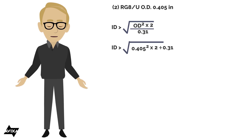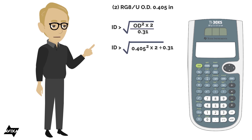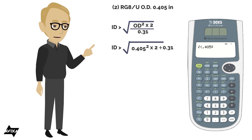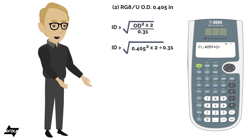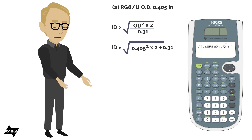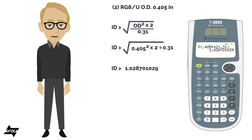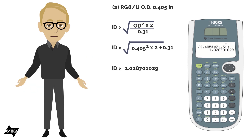Any time you write a value less than one, the proper way to write it is 0.31, so that people don't miss the decimal point. Now let's enter it correctly: open the square root function — you can see it opens the parenthesis — then 0.405 squared, times two, divided by 0.31. It's going to follow PEMDAS: exponent first, then multiplication and division left to right. The result is 1.028701029.